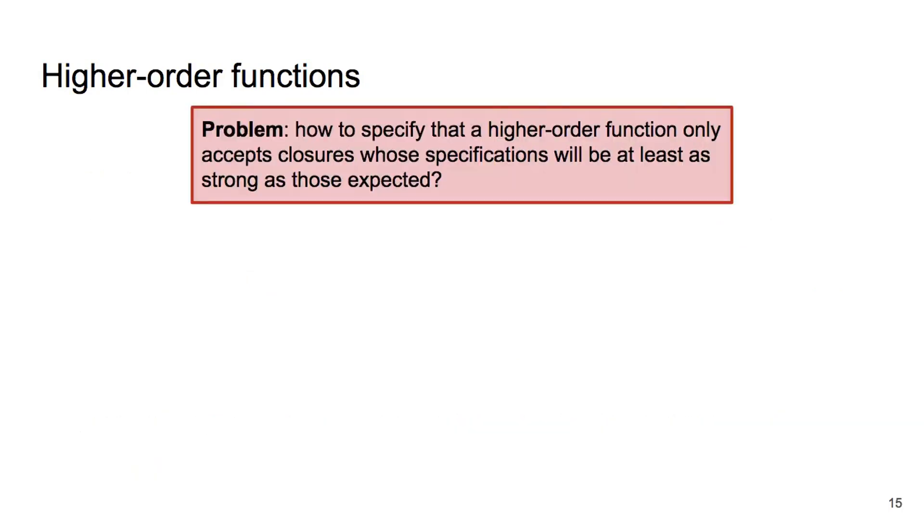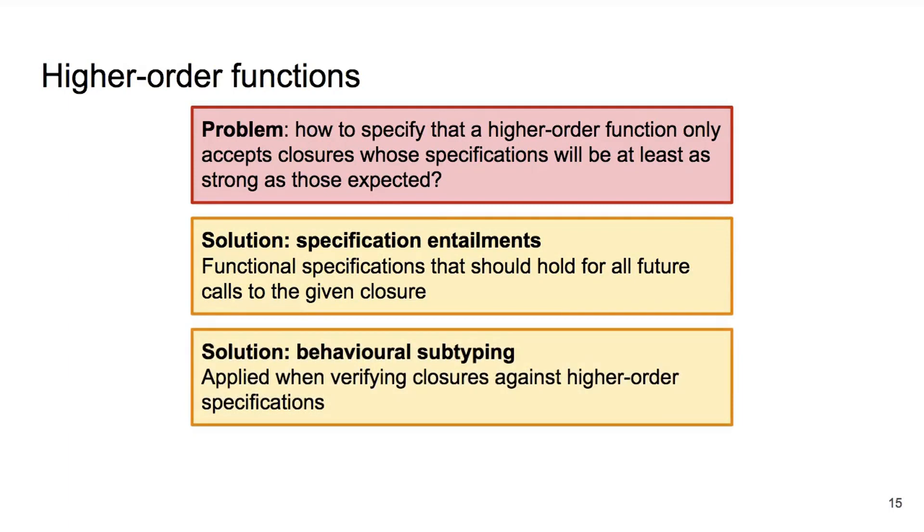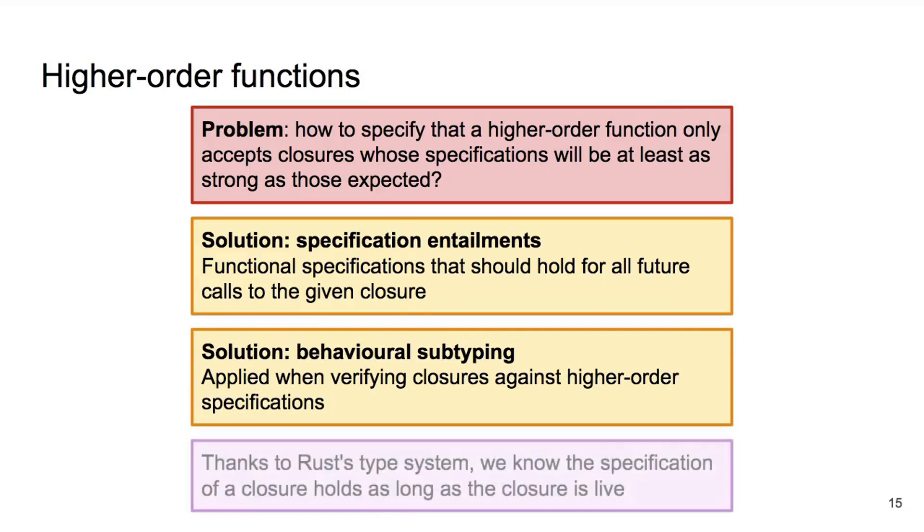To summarize, we needed a way to specify the expected behavior for closures passed to higher-order functions. We have used specification entailments to achieve this, and behavioral subtyping to verify whether specification entailments are satisfied by concrete closure specifications. Once again, we rely on Rust's type system to know that the specification of a closure, including any history invariants, remains true while the closure is live.